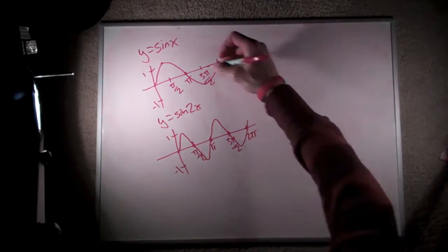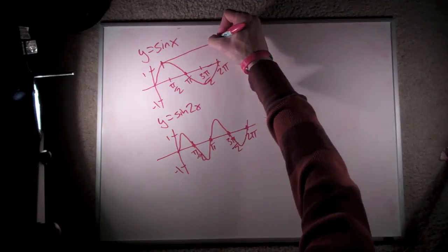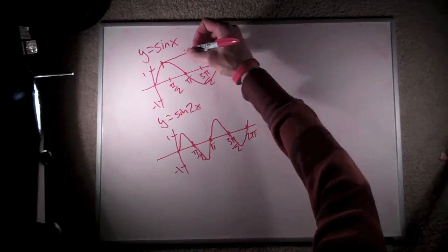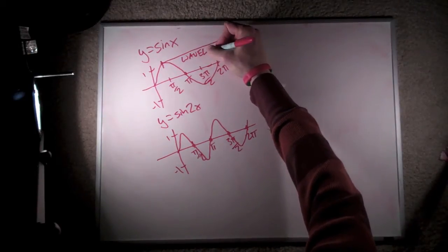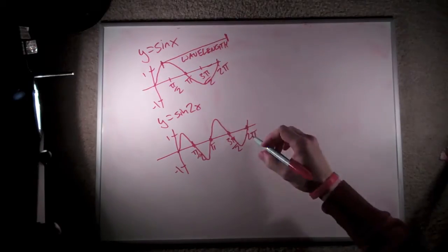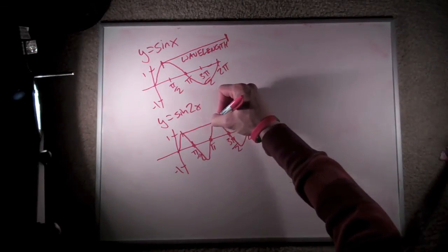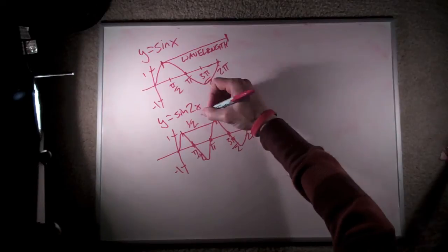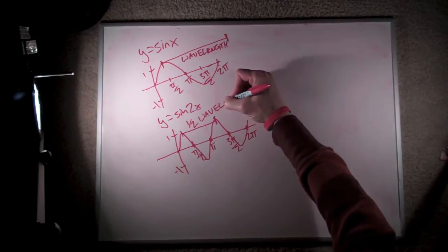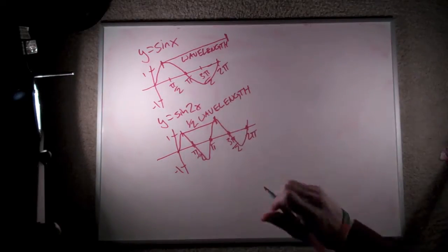As you can see, it does significantly change the appearance of the graph. Namely, if we take the distance between two peaks on each graph, this is a property called wavelength, what we find is that the graph of y = sin(2x) has one-half the wavelength of y = sin(x).